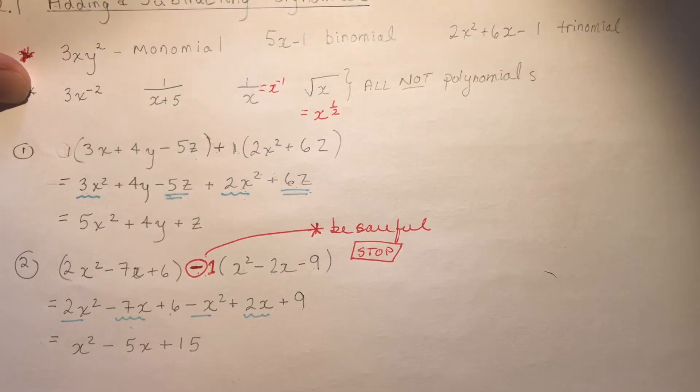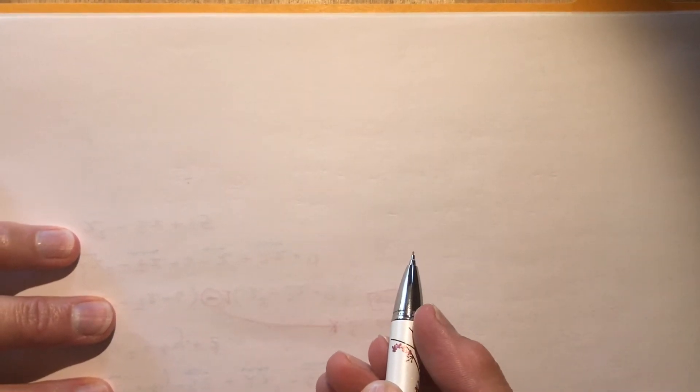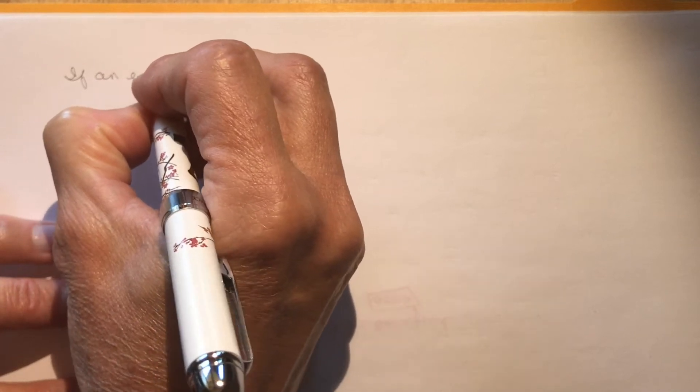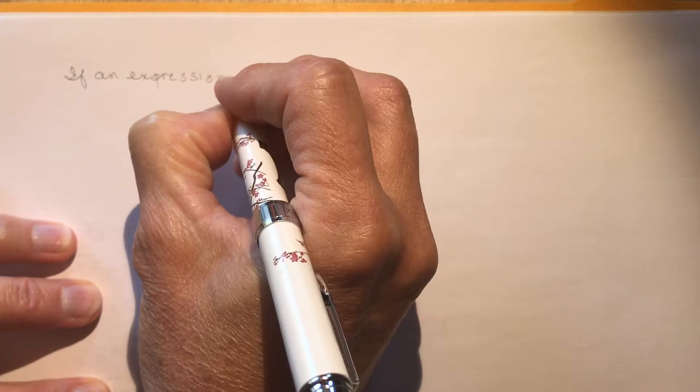So now we're going to talk about how to tell if an expression is equivalent. So what does equivalent mean? Well, if I told you 2 plus 2 is equal to 4, you'd say, well, it means the left side of the equation has to be equal to the right side. Right? 2 plus 2 is 4. So if expressions are equivalent, because we're talking about two different expressions, right?